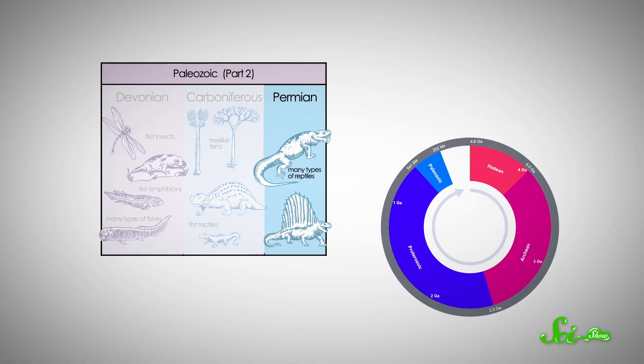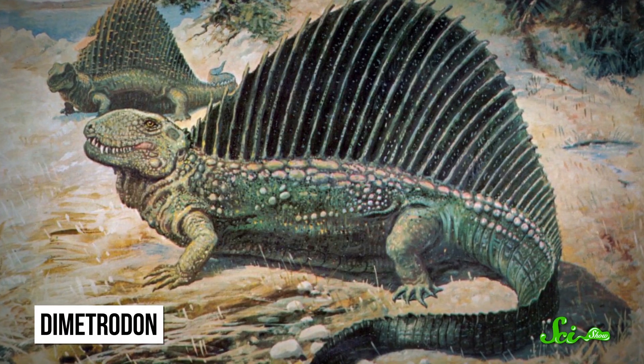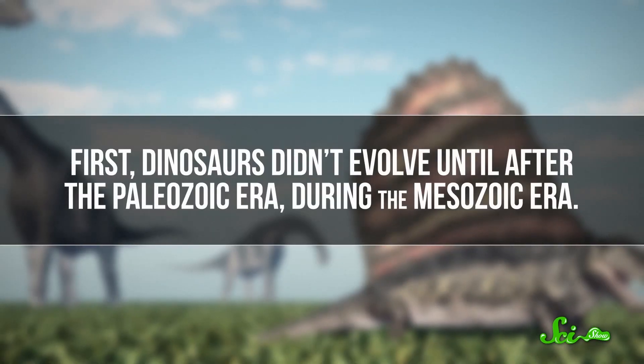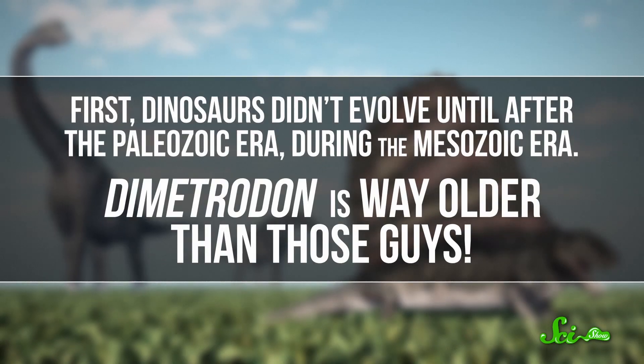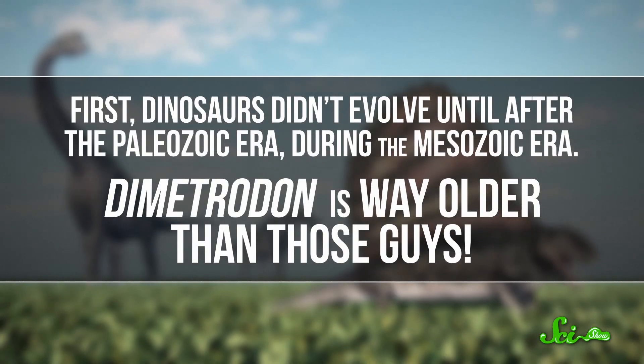The Permian, the last period of the Paleozoic, began 299 million years ago. It was the first age dominated by land vertebrates, including the first big vertebrate land predators, like the fin-backed Dimetrodon. If you had a dinosaur-themed coloring book or toy set that featured Dimetrodon as a kid, you should know two things. First, dinosaurs didn't evolve until after the Paleozoic era, during the Mesozoic era. Dimetrodon is way older than those guys.